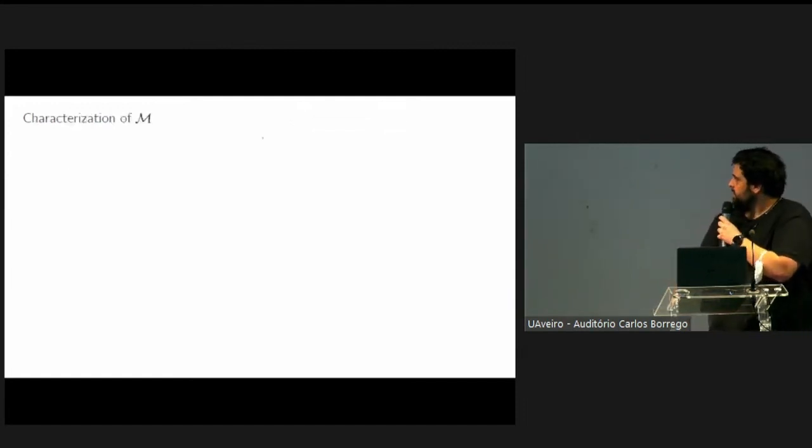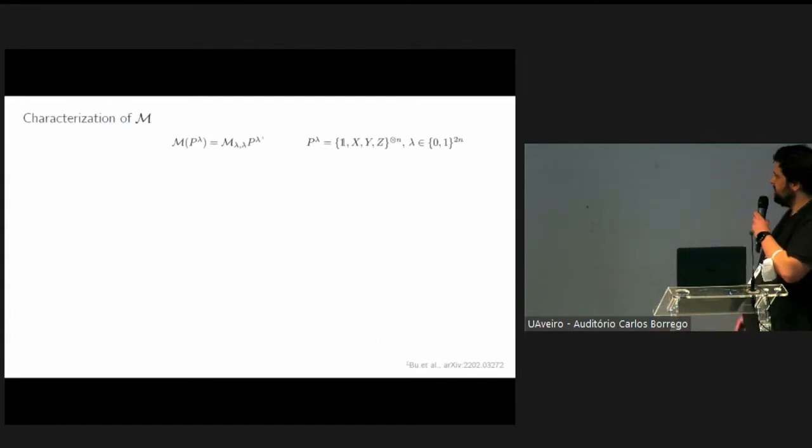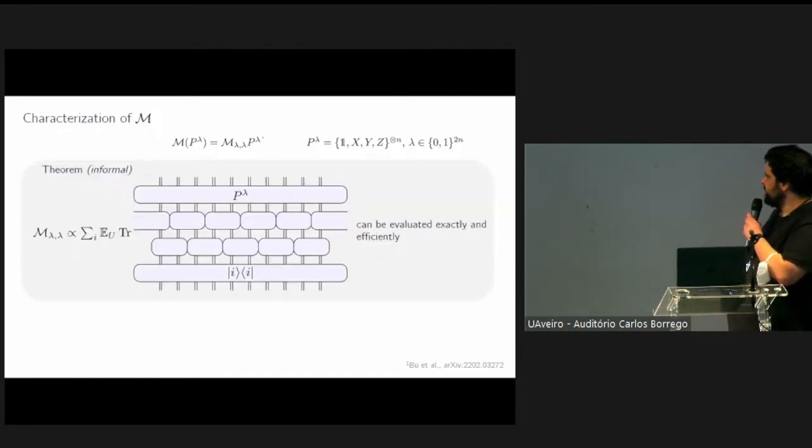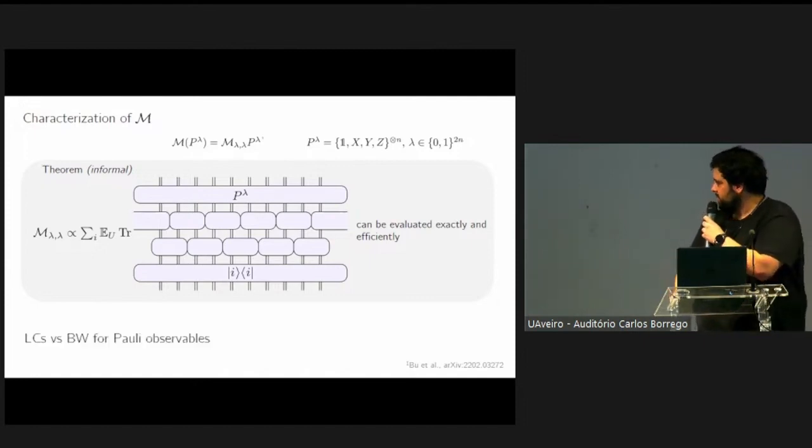In particular, we are interested in the characterization of the measurement channel associated to this ensemble, knowing that it is diagonal in the Pauli basis. We will see that given this representation in terms of a tensor network, meant to be two copies of this circuit, we can evaluate exactly and efficiently the diagonal elements of this channel. Finally, we will also quickly compare the brickwork shadows with the local Clifford ensemble, at least in the case of Pauli observables.